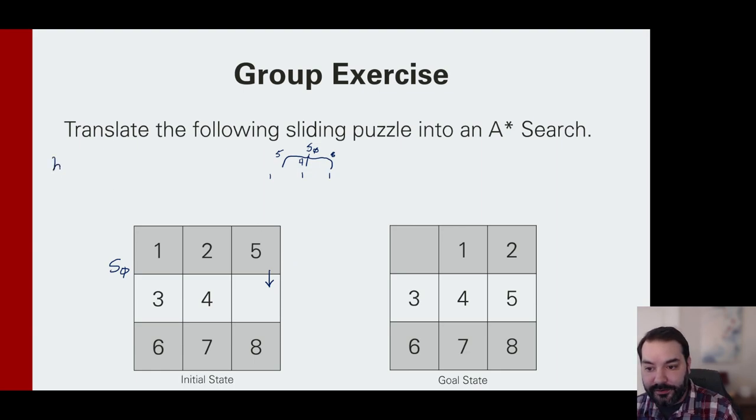From the perspective of using one of those heuristics: if I moved down my five, h1, that heuristic would be only two of them are out of place because five's in the right spot. If I looked at the Manhattan distance, we move the five down, that's a zero. Two needs to move one over, one needs to move one over. So we'd still get two. But what I'm getting at here is that would be the decision for that first step.